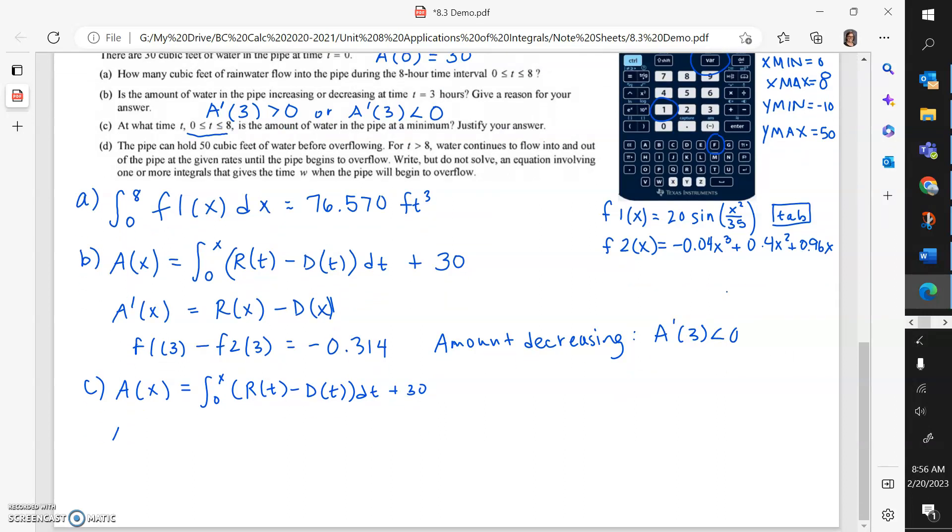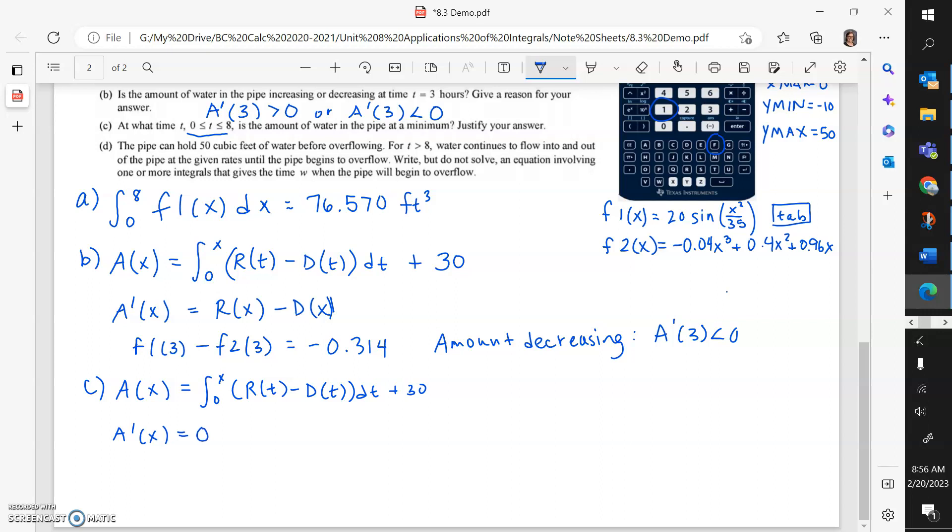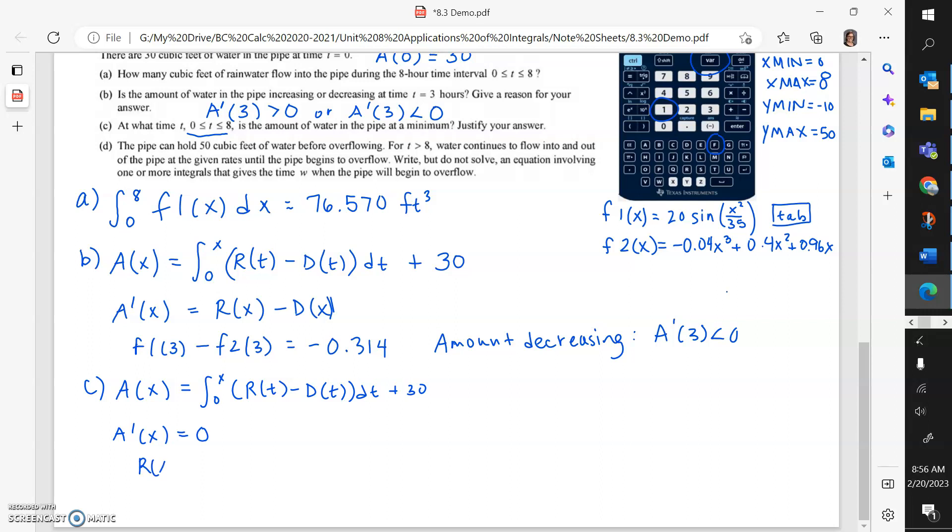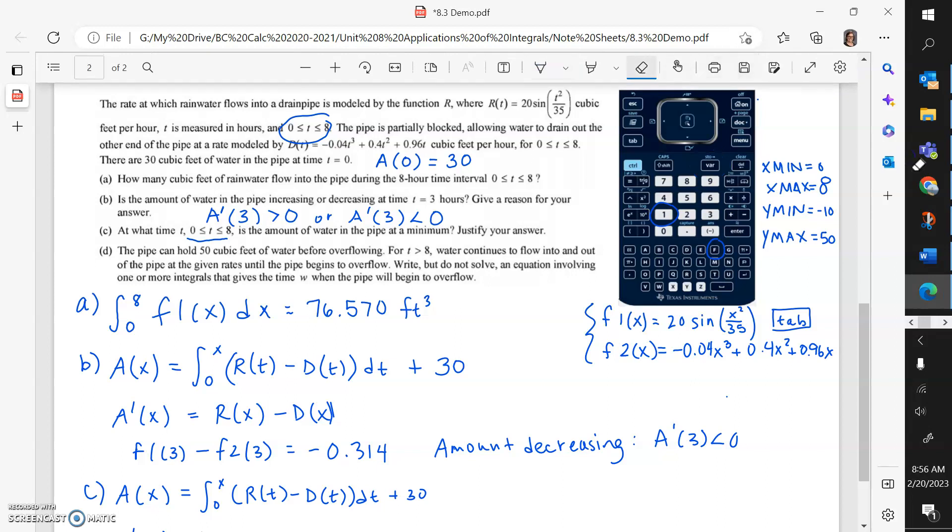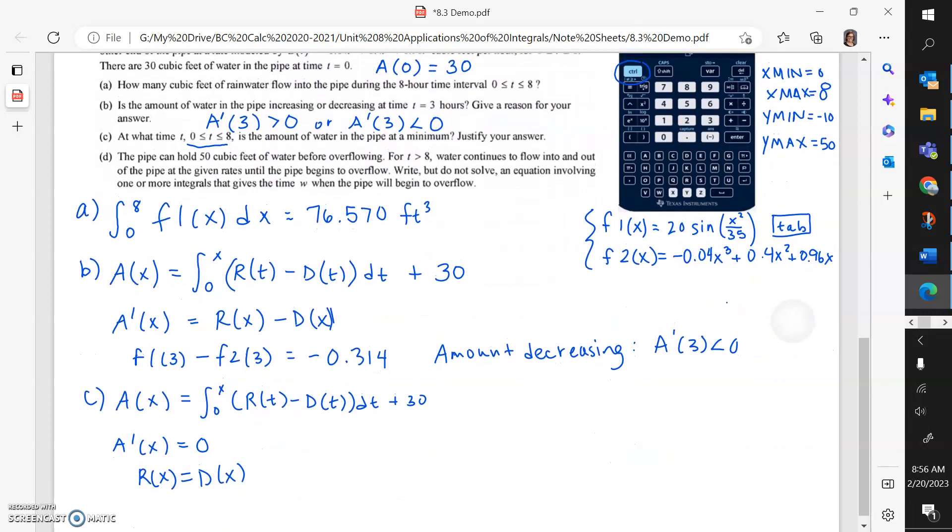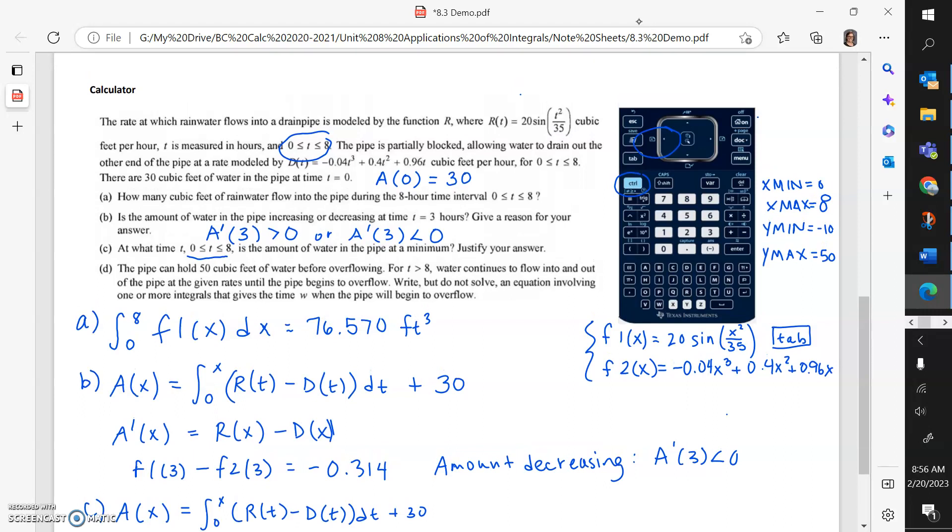Critical points are going to be when the derivative is 0. I set that equal to 0, and because I know the derivative function, that's going to be when the R of X equation is equal to the D of X equation. Well, those should both be graphed on the same screen. So in order to see that on your graph, you're going to go to that screen. Those two graphs intersect, and that's where they're equal to 0.